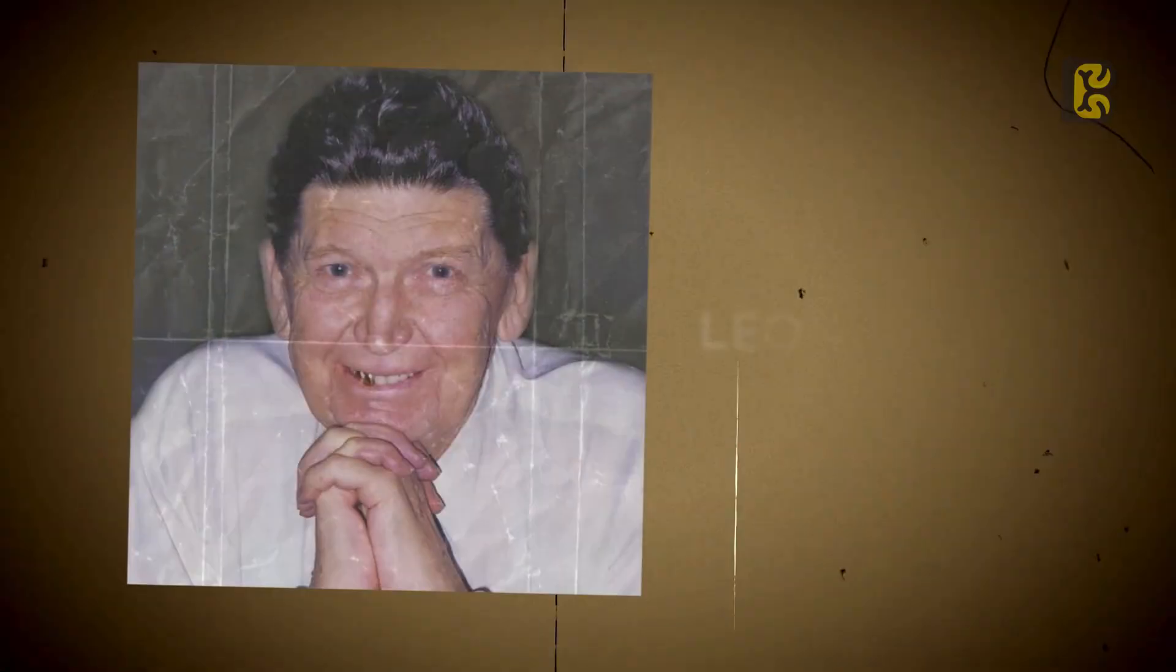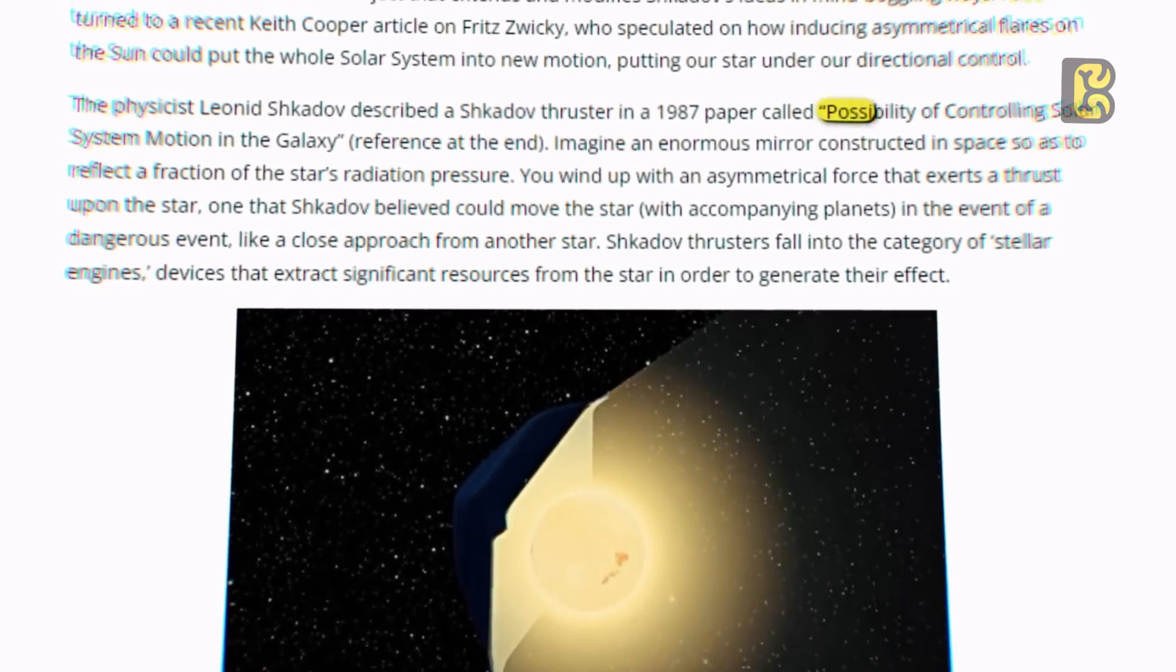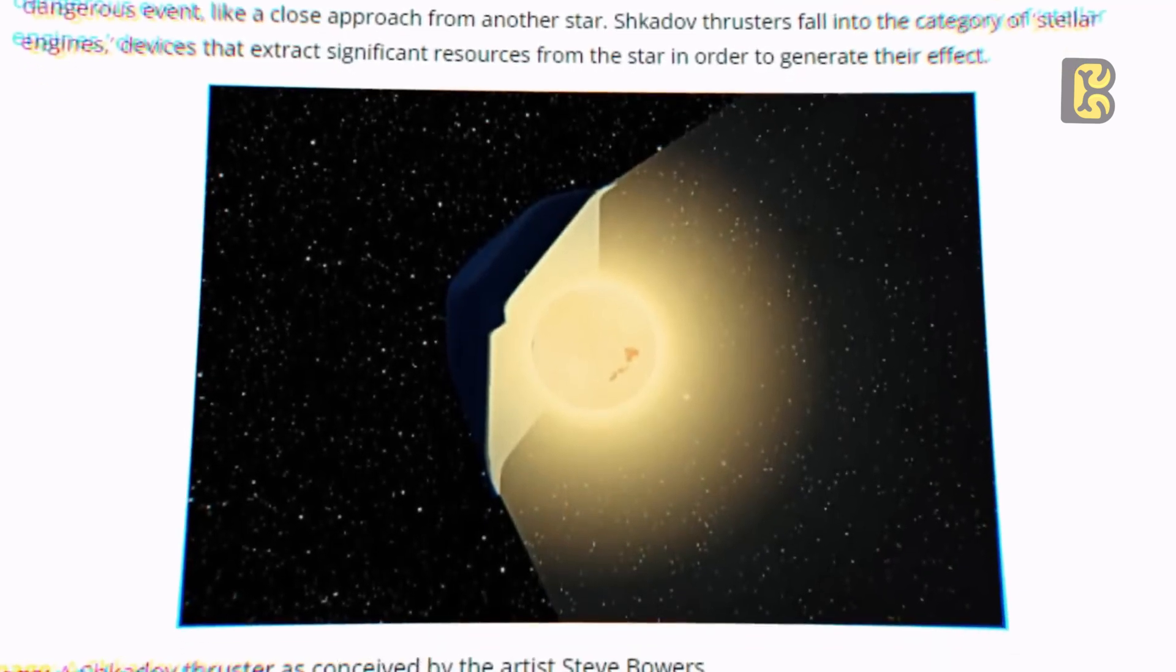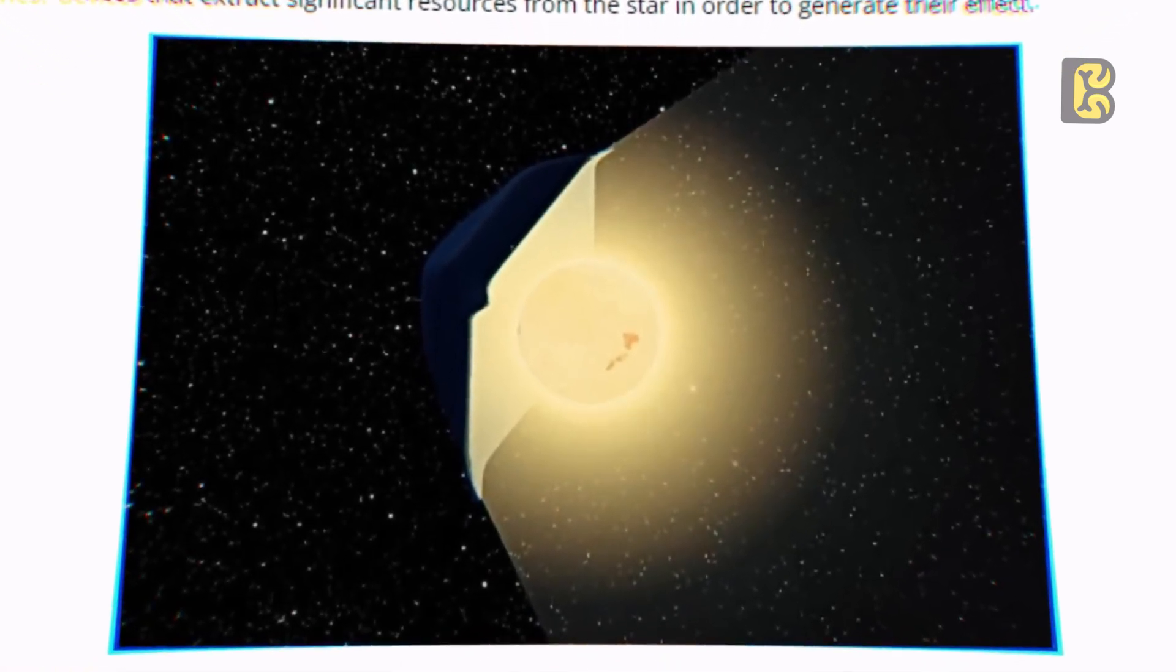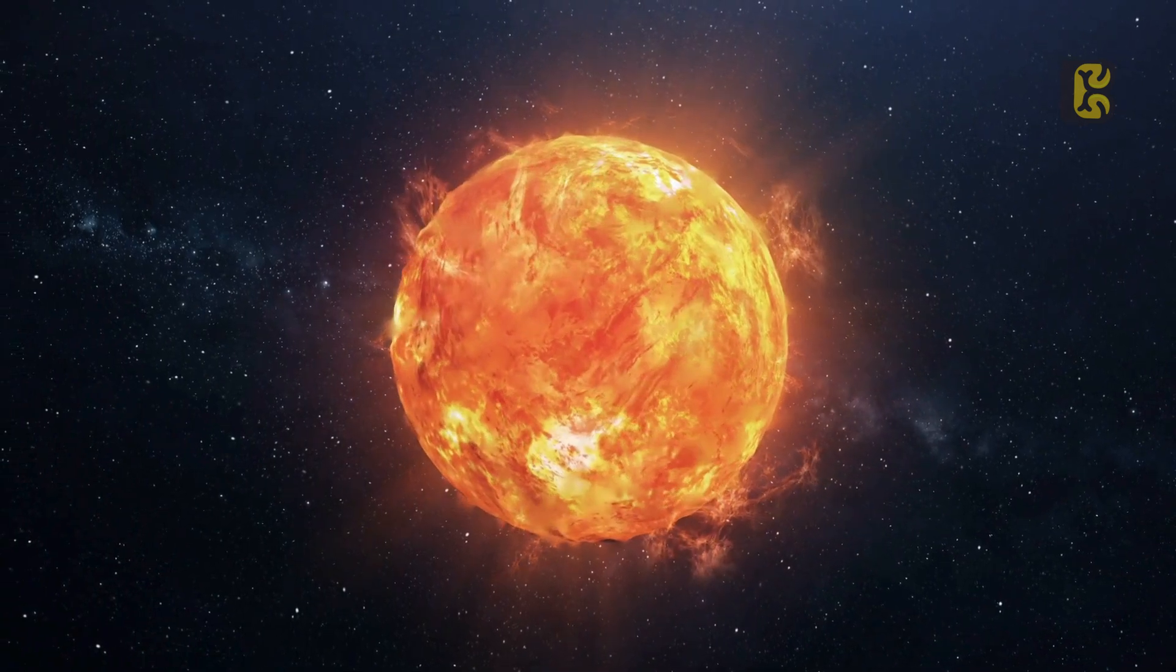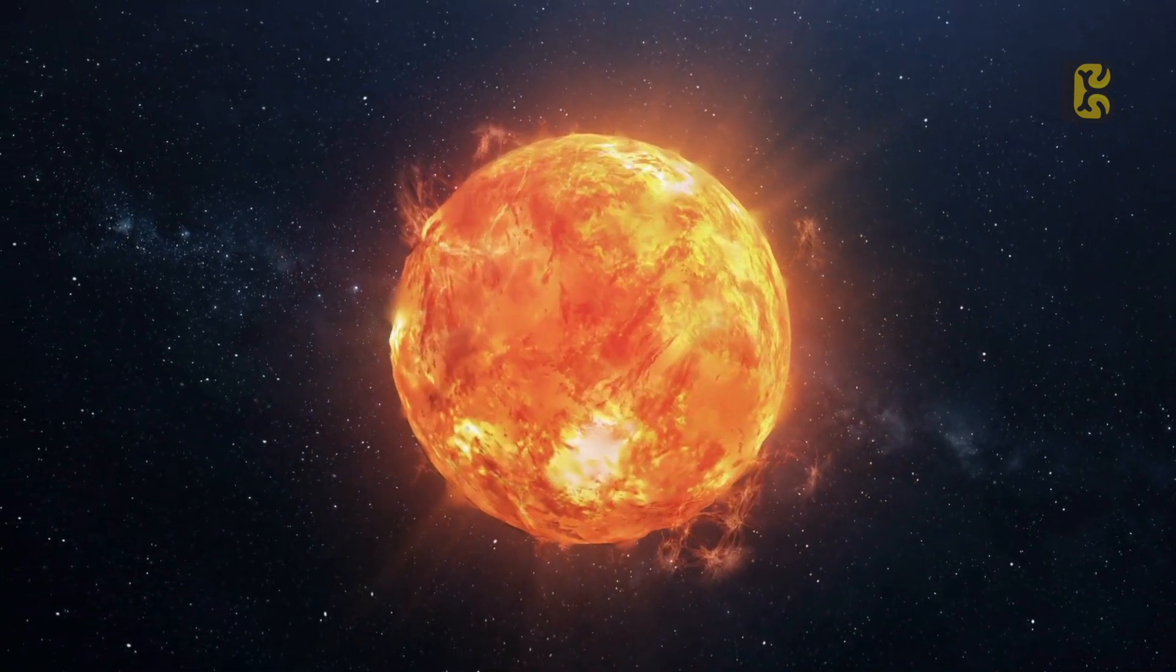About 26 years after Fritz, Russian physicist Leonid Shkadov published a paper in 1987 titled Possibility of Controlling Solar System Motion in the Galaxy. In this, he proposed a mirrored structure that would work as a thruster by reflecting sunlight back towards the Sun. Shkadov analyzed that photons released by the Sun give it an almost imperceptible push in the opposite direction of the light emission.